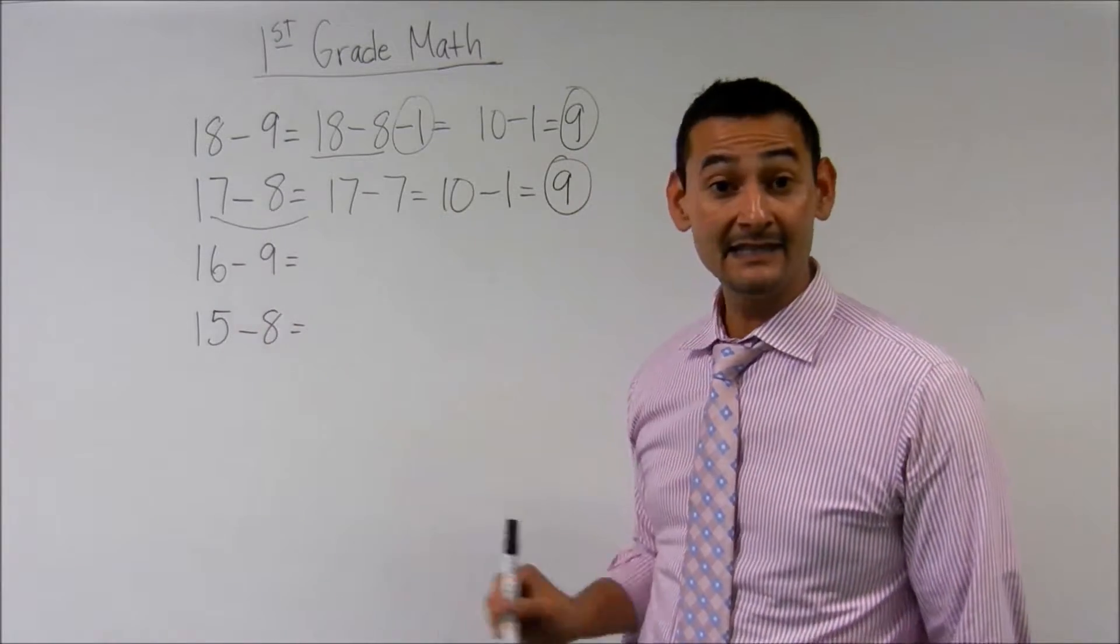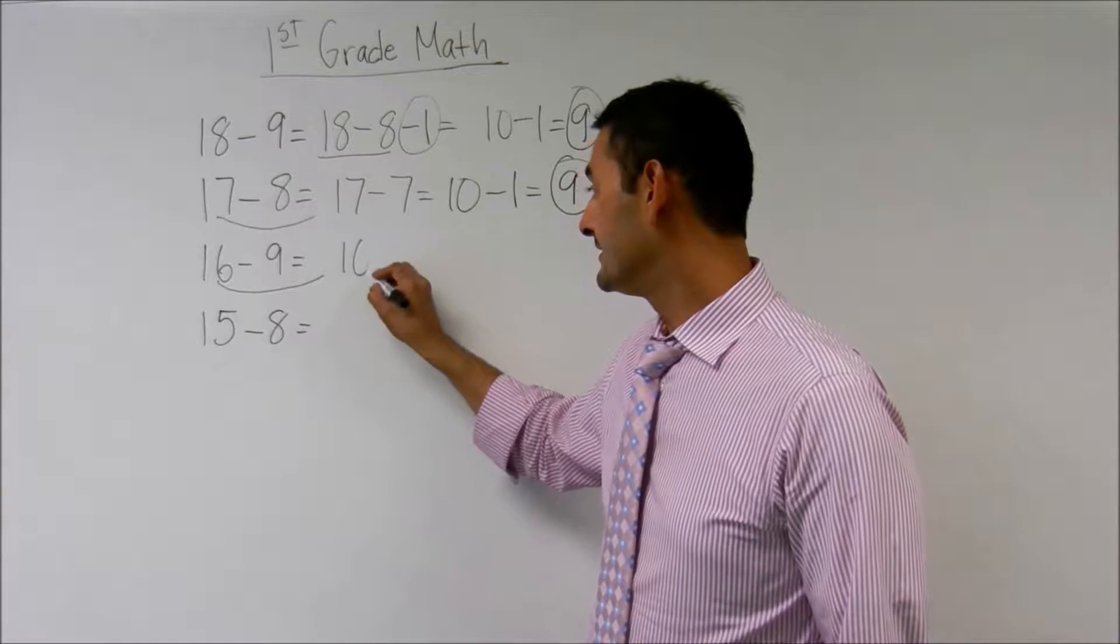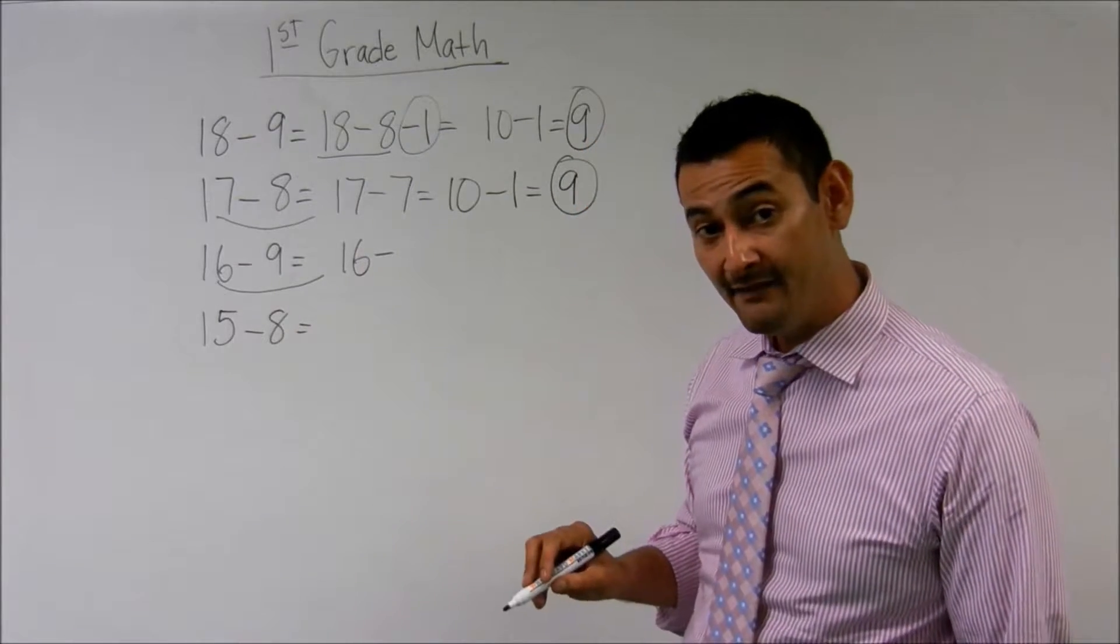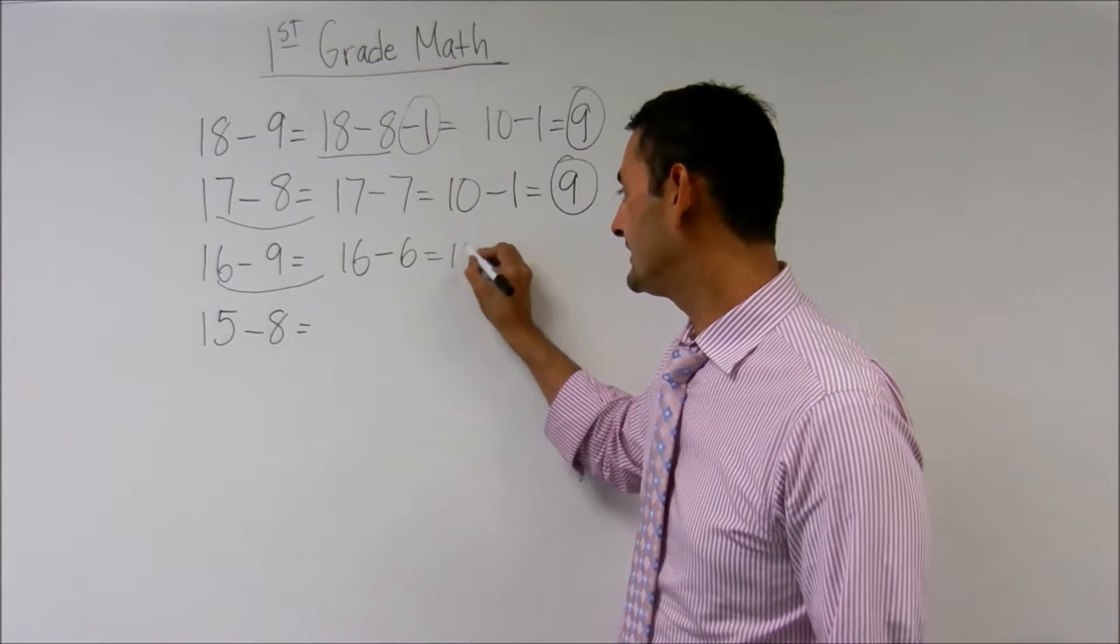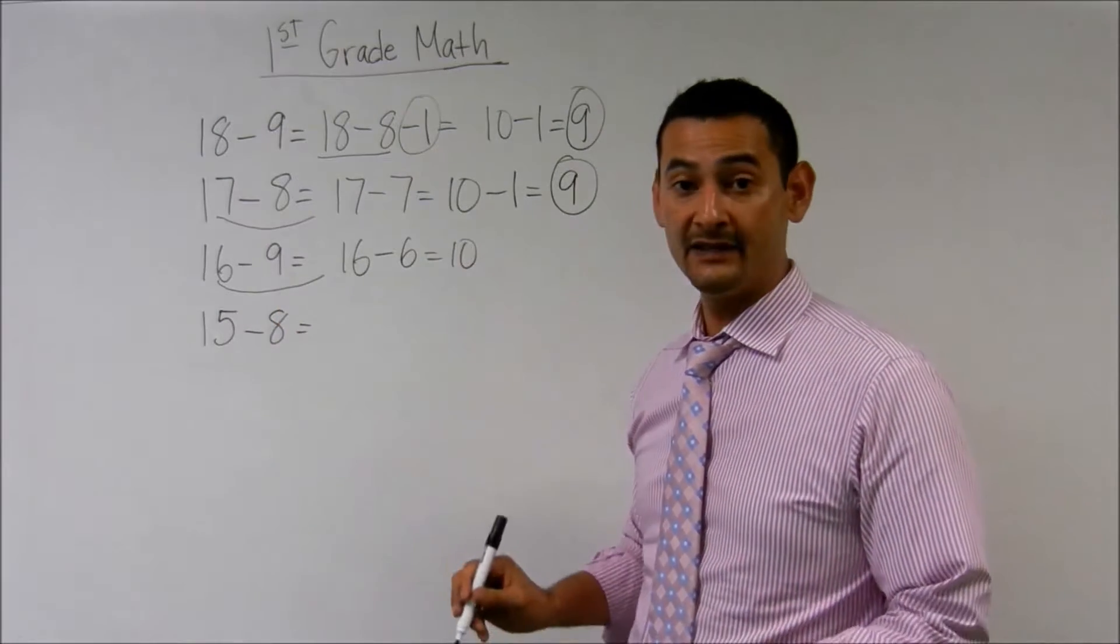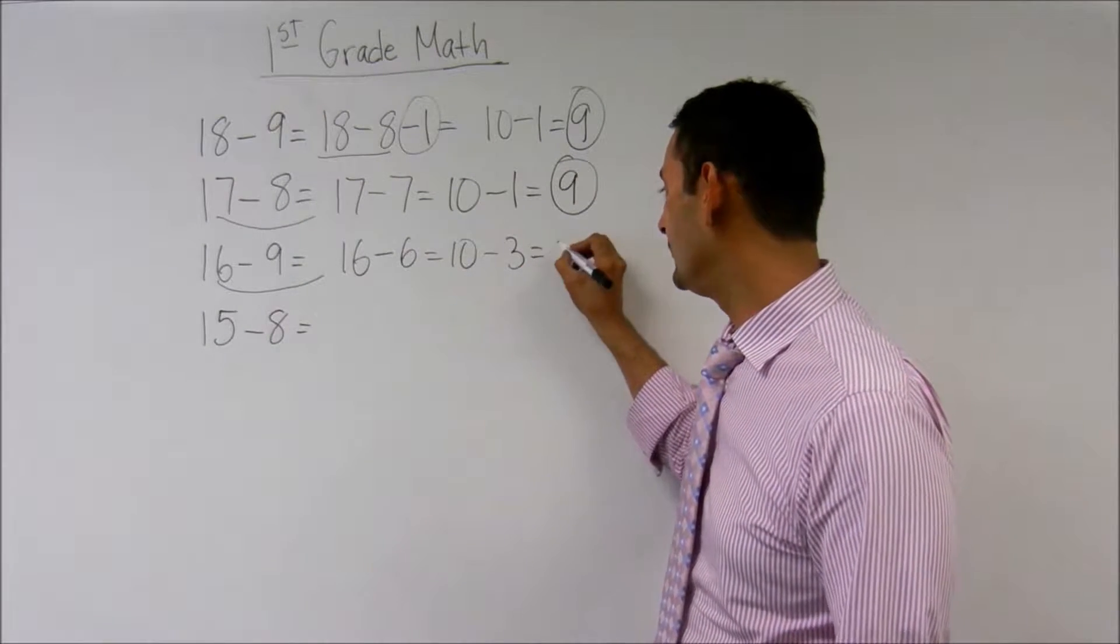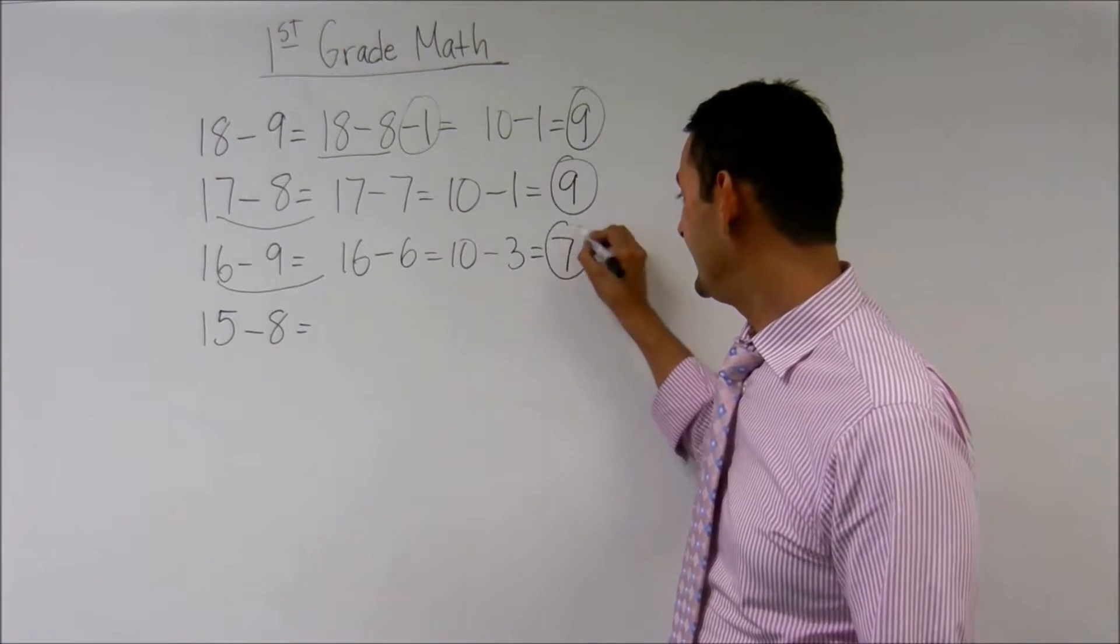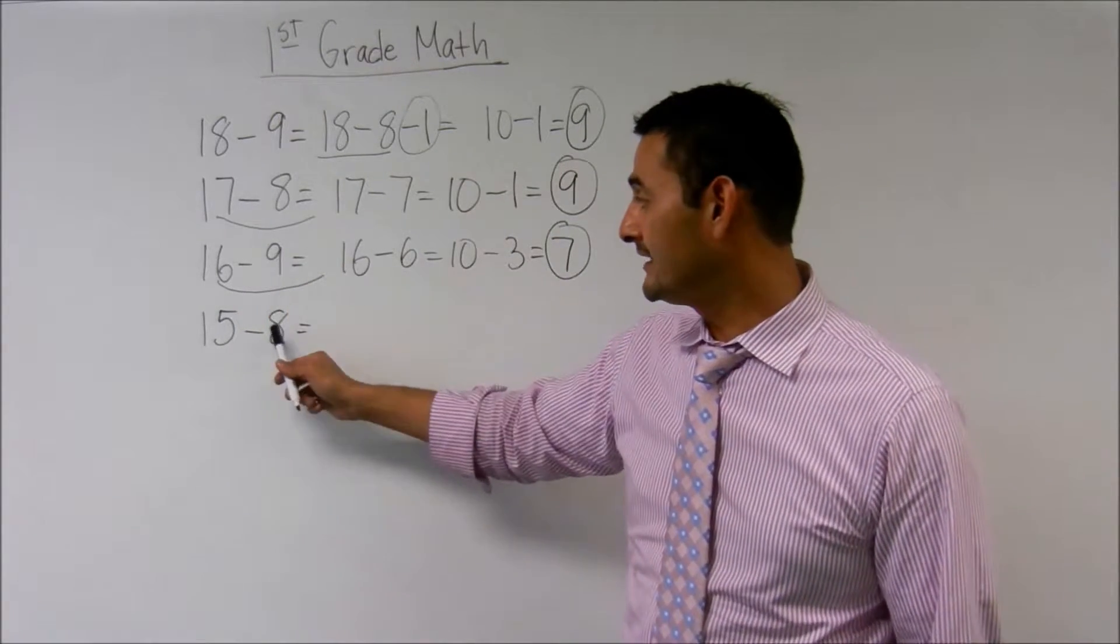Let's take a look at this one, 16 minus 9. I'm going to move over to 16. 16 minus what equals 10? That's right, 6. 16 minus 6 equals 10. And then here, this 6 and this 9, I need 3 more. 6, 7, 8, 9. So 10 minus 3 equals 7. And that's it. 16 minus 9 equals 7. Now let's take a look at this last one.